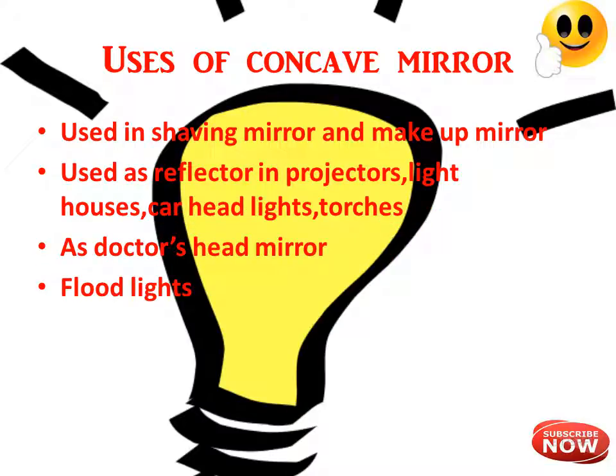Now coming to the uses of mirrors. Concave mirrors are used as shaving mirrors and makeup mirrors, because when the face is placed between the pole and focus of the concave mirror, an erect, virtual, and highly magnified image is formed. They are also used as reflectors in projectors, lighthouses, car headlights, and torches — because when the source is placed at the focus of the concave mirror, a parallel beam of light is produced.